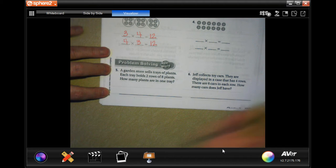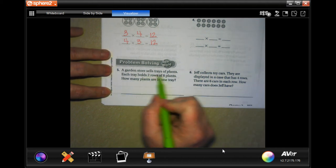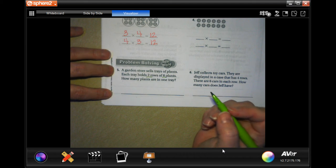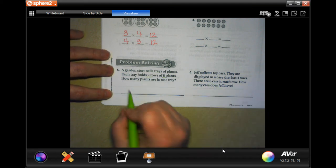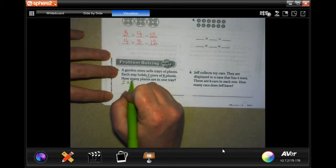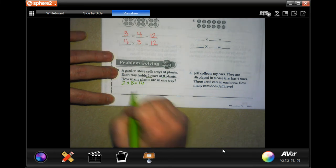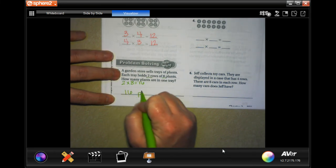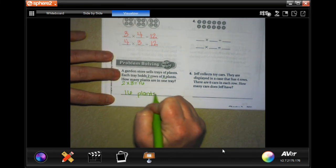We're going to go down and do the problem solving. The garden source sells trays of plants that hold 2 rows of 8 plants. How many plants are in one tray? Well, 2 times 8 is 16. So, 16 plants.